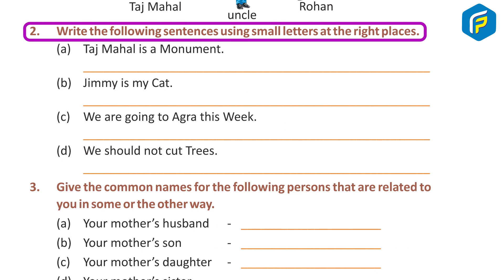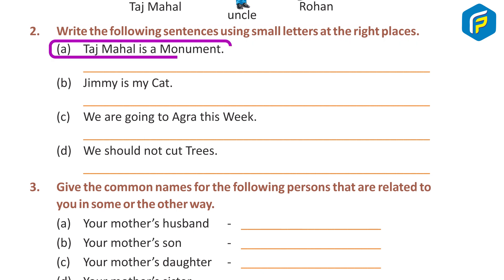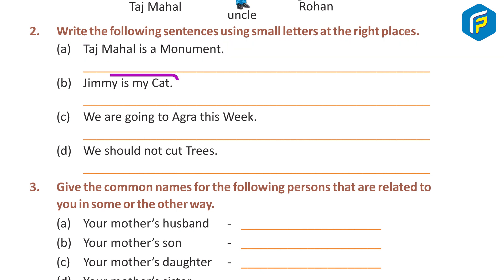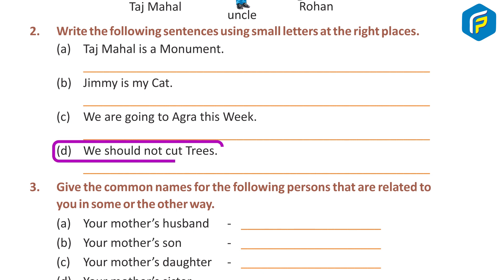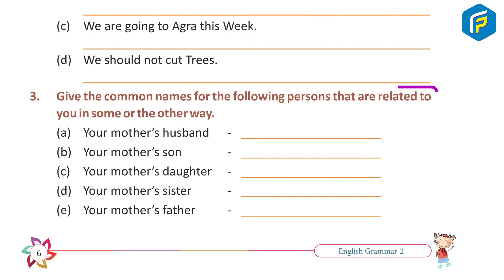Exercise 2: Write the following sentences using small letters at the right places. A. Taj Mahal is a monument. B. Jimmy is my cat. C. We are going to Agra this week. D. We should not cut trees. Answer: Do it yourself.